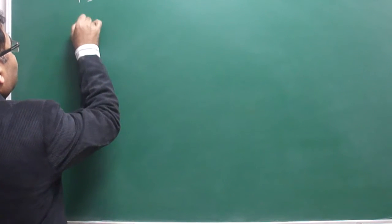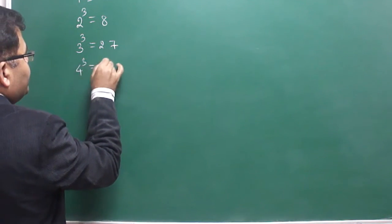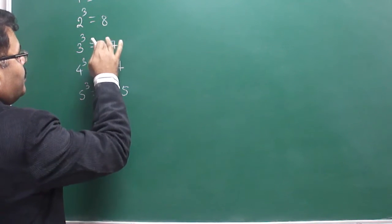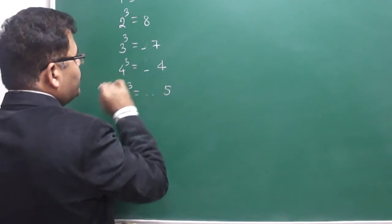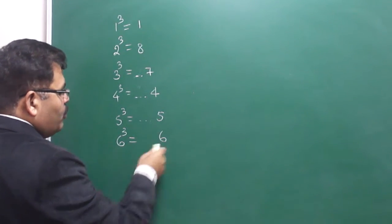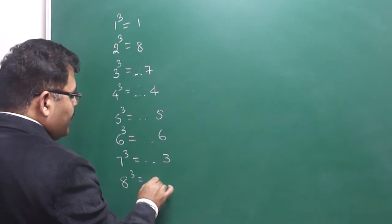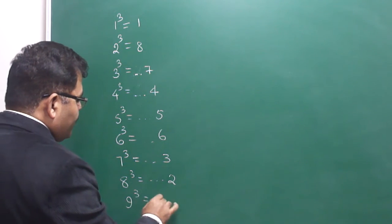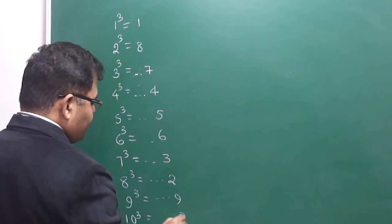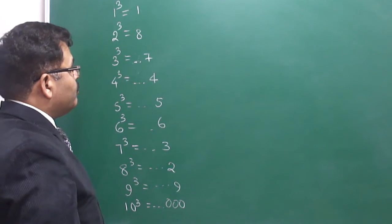1 cubed is equal to 1. 2 cubed is 8. 3 cubed is 27, so 7 is at the unit place. 4 cubed is 64, so 4 is at the unit place. 5 cubed is 125, so 5 is at the unit place. We will see the numbers at the unit place only. 6 cubed — unit place will have 6. 2 and 6 are exactly the same. 7 cubed — 3 will be at the unit place. 8 cubed is 512, so 2 will be at the unit place. 9 cubed is 729, so 9 will be at the unit place. And 10 cubed is 1000, so 0 will be at the unit place — three zeros will come.